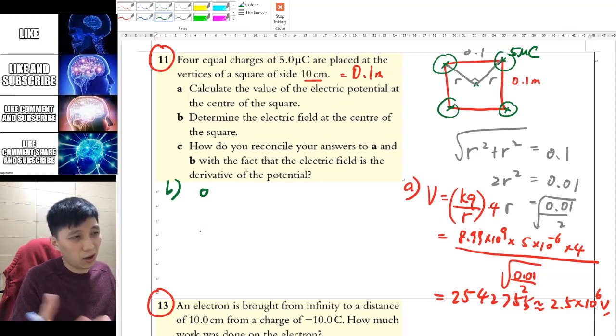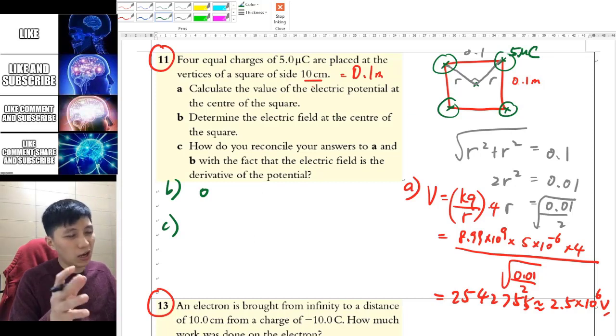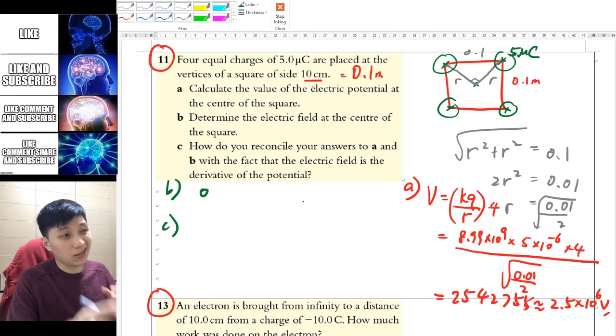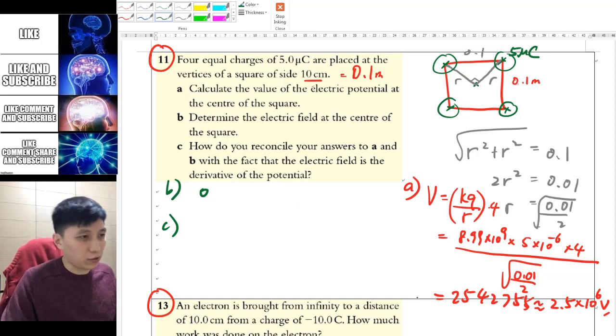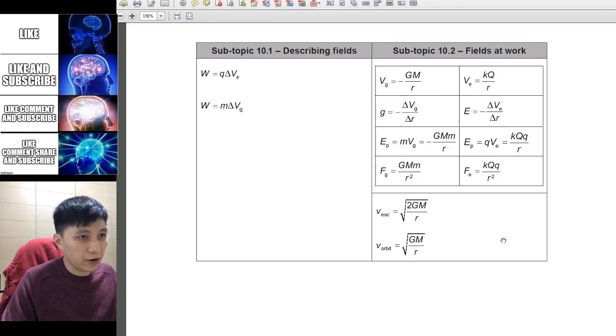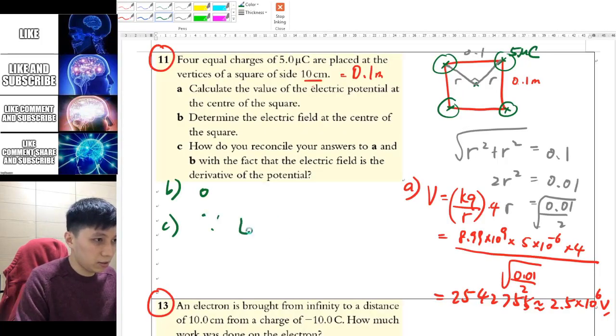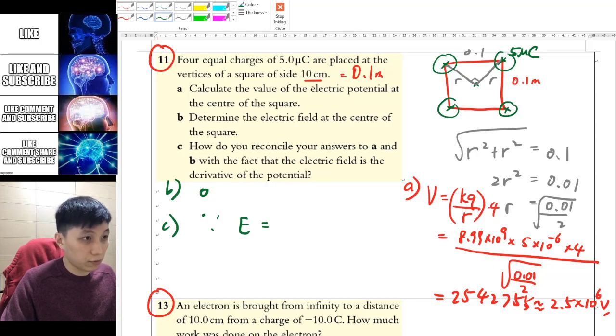For part b, no matter what charge you have, all the forces from each vertex would cancel out because they have the same quantity of charge and distance. Geometrically, they all cancel out—this one with this one, and this one with this one. So for part b it's simply 0.